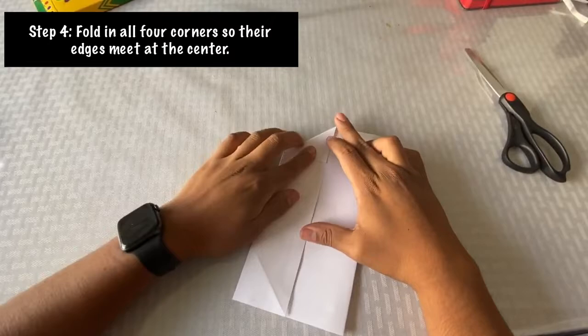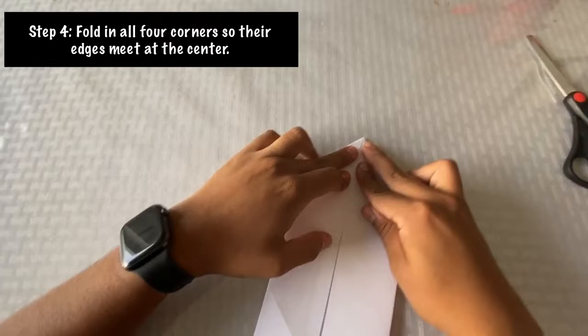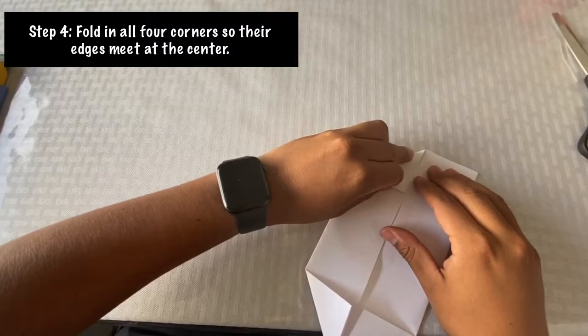Moving on to Step 4, we are going to fold in all four corners so their edges meet at the center. At each corner, make sure you fold it in to a perfect half, well, right triangle.